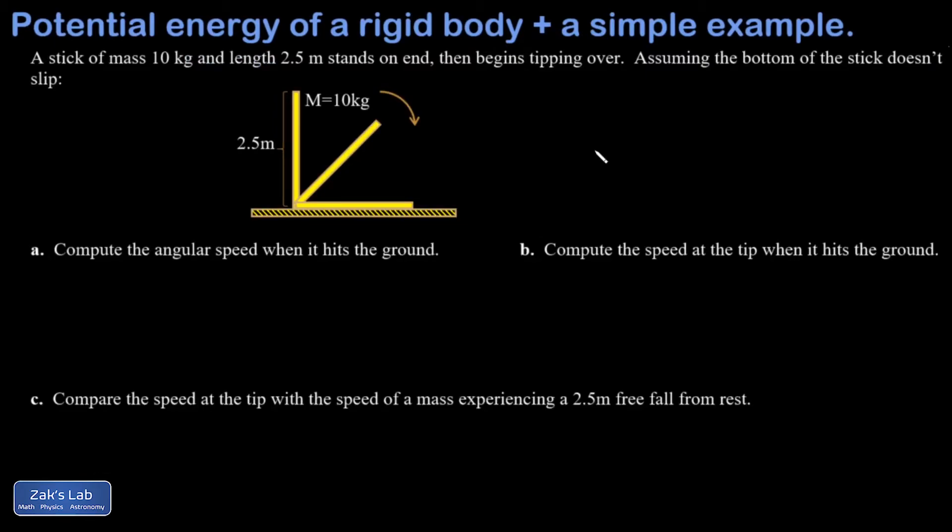I have a stick of mass 10 kilograms. And we're assuming it's uniform in its thickness. That puts the center of mass right at the geometric center. And it has a length of 2.5 meters. It's standing up on one end, and then it starts tipping over.